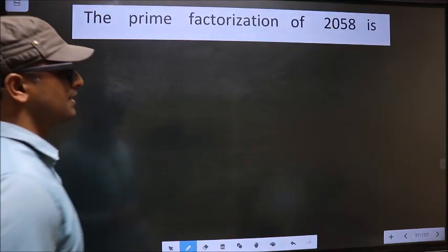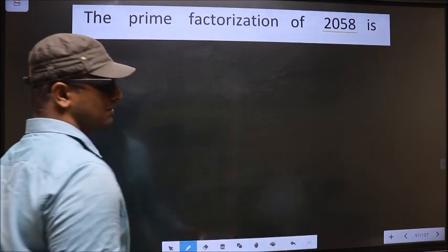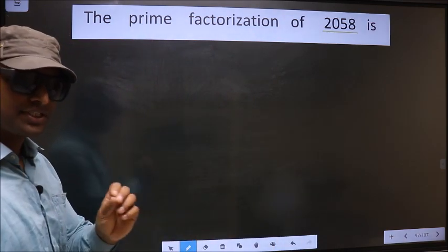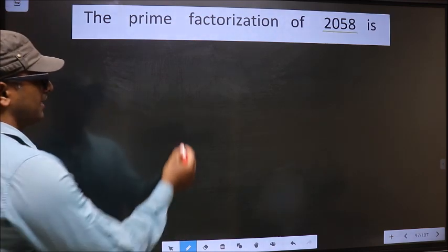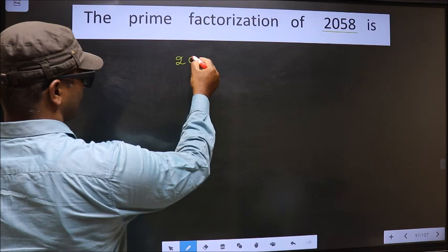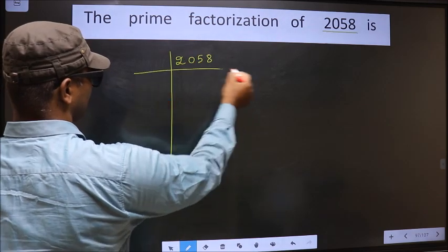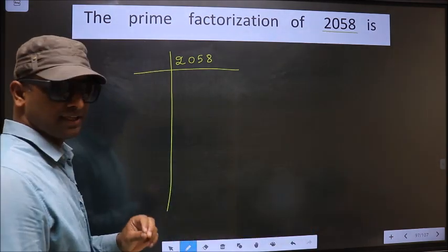The prime factorization of 2058. To do prime factorization, first we should frame it in this way. That is 2058.